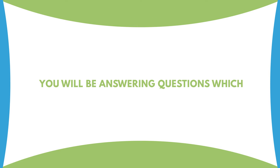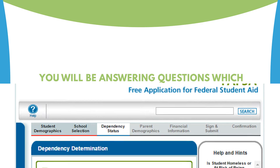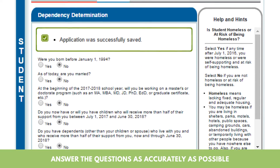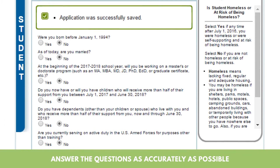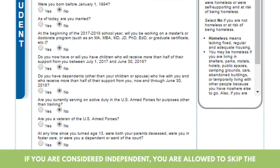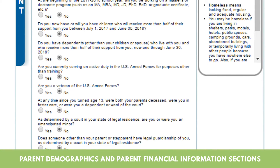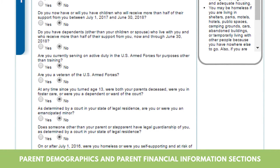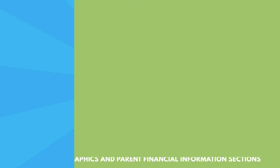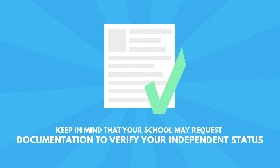In this section, you will be answering questions which will determine your dependency status. Answer the questions as accurately as possible. If you are considered independent, you are allowed to skip the parent demographics and parent financial information sections. Keep in mind that your school may request documentation to verify your independent status.